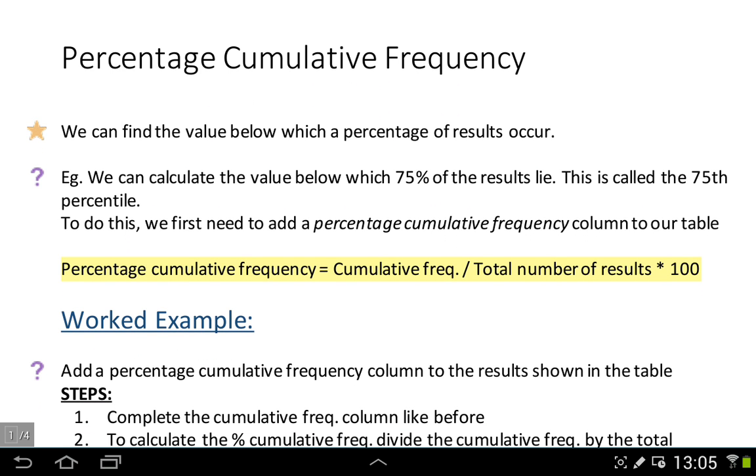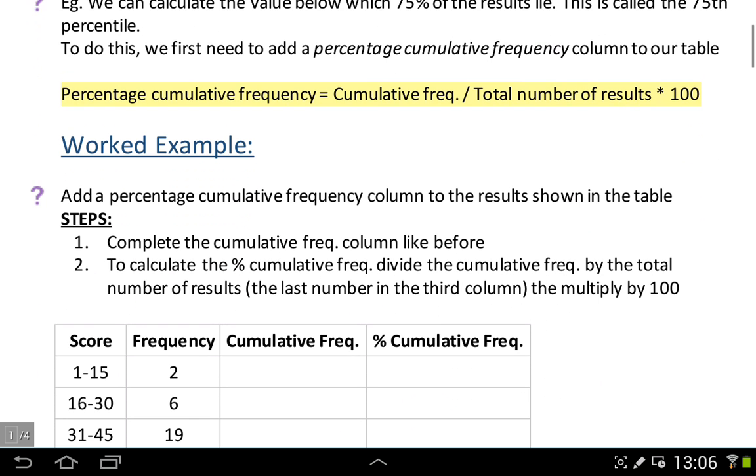I've got a little formula here. Percentage cumulative frequency is equal to the cumulative frequency, which is in your table, divided by the total number of results, and multiplied by 100 to turn that into a percent. Let's have a look at a worked example.